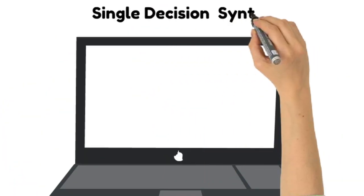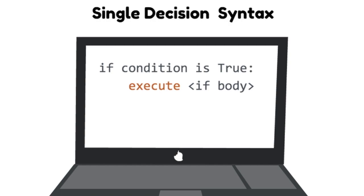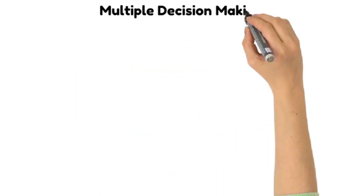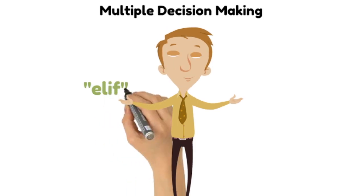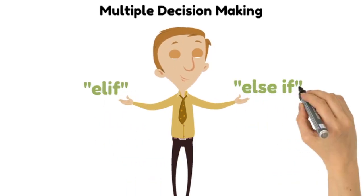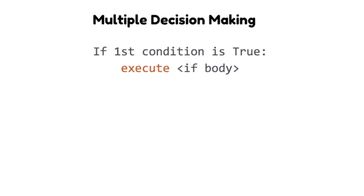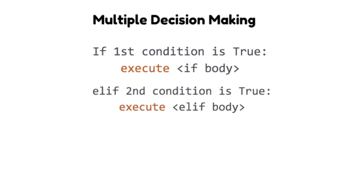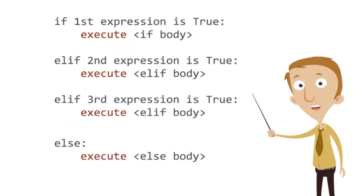Let's talk about single decision processes. If a condition is satisfied, we will execute a certain line of code. Else, we will execute a different set of code. We can also account for multiple decisions in our code using an elif clause, which means else if. If the first condition is met, the code within the if block is executed. Elif the second condition is met, code within the elif block is executed. Else, we execute the code within the else block. We can account for as many decisions as we want within our if-else conditions.